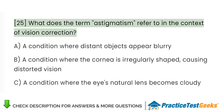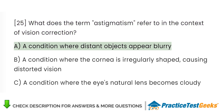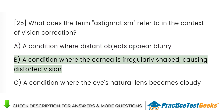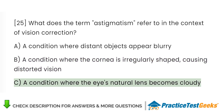What does the term astigmatism refer to in the context of vision correction? A. A condition where distant objects appear blurry. B. A condition where the cornea is irregularly shaped, causing distorted vision. C. A condition where the eye's natural lens becomes cloudy.